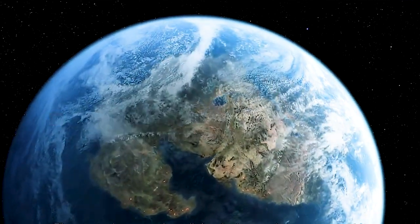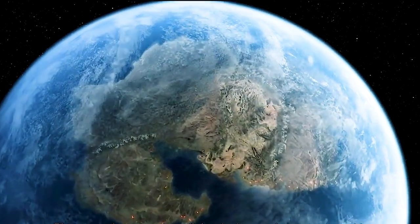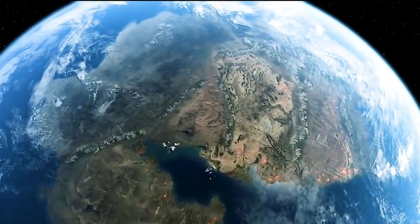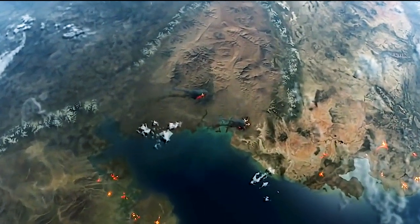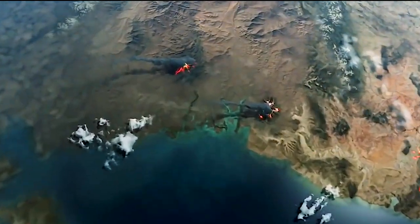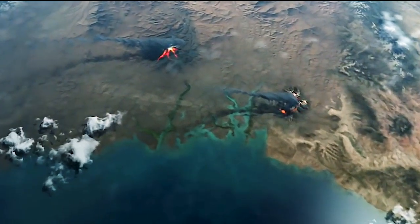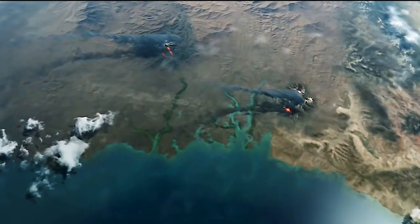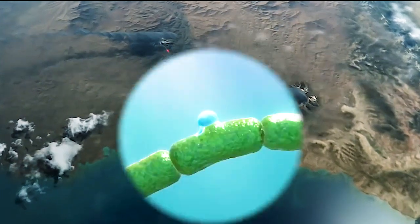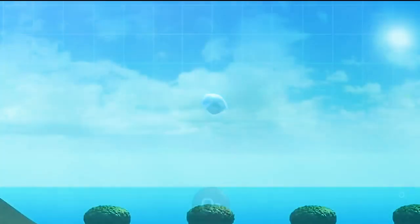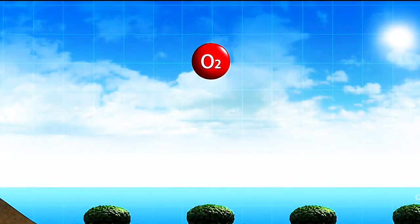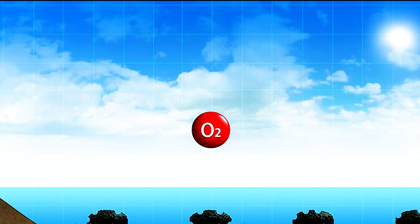Plate tectonics caused small, developing continents to assemble into a single supercontinent called Nuna. As Nuna formed, its burgeoning landmass provided cyanobacteria with an expanding habitat in its lakes, rivers, wetlands and estuaries. Cyanobacteria produces free oxygen through photosynthesis. At that time, however, most of the free oxygen produced was consumed in decomposing dead cyanobacteria, so very little free oxygen accumulated in the atmosphere.